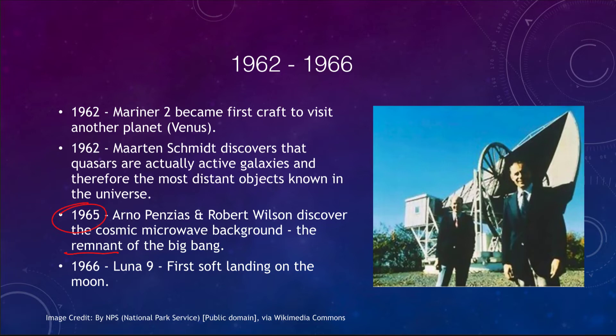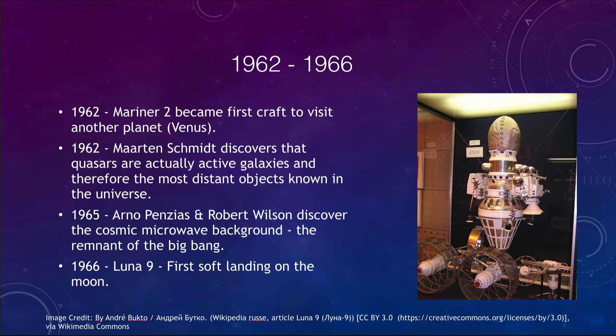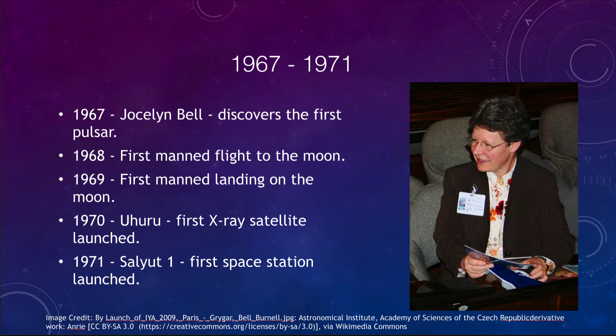In 1966, we had the first soft landing on the moon. The earlier Luna 2 was a crash landing, but Luna 9 achieved the first true soft landing. Moving into the late 1960s and early 70s, a lot continued to happen.